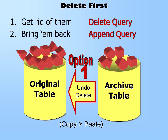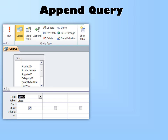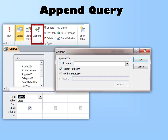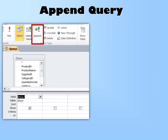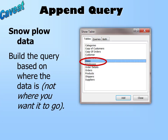In this case, we want to undo a delete and bring records back. We start with our select query and bring all the disco products back. I could run a criteria to find one specific product, but here we'll bring all of them. Then I turn it into an Append query and it asks what table you want to push it to — we're pushing from Disco back into products. You can also pull from another database. The caveat with the Append query: remember to build the query based on where the data is now, not where you want it to go.